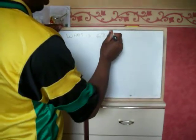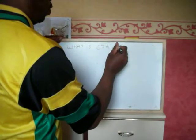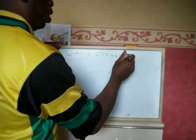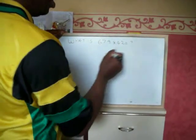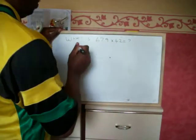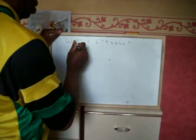Is 679 times 42 equal to? Quite hard? Think about it like this.